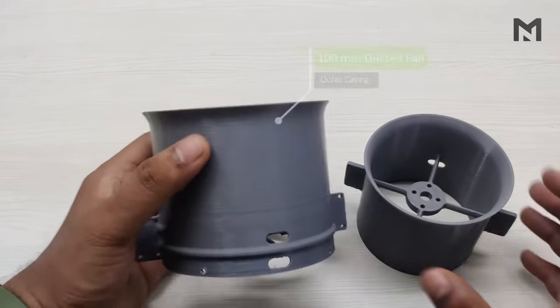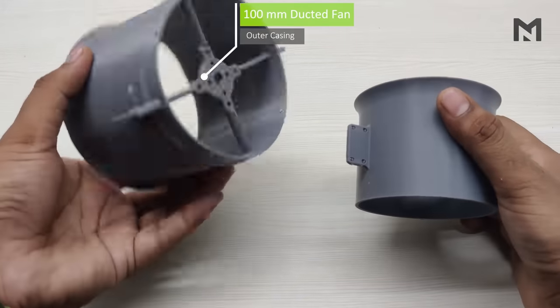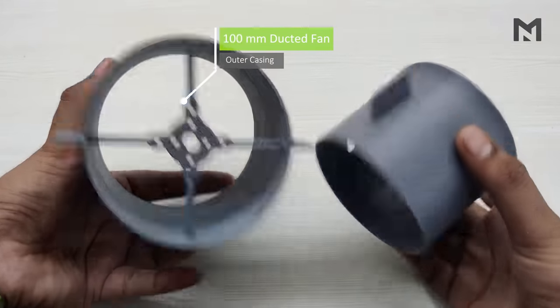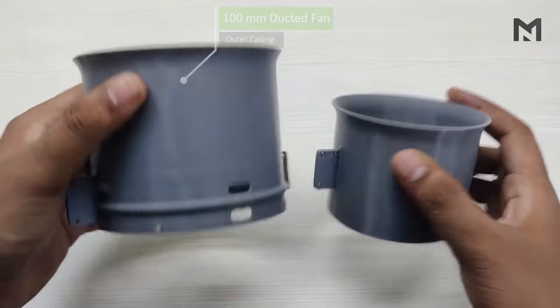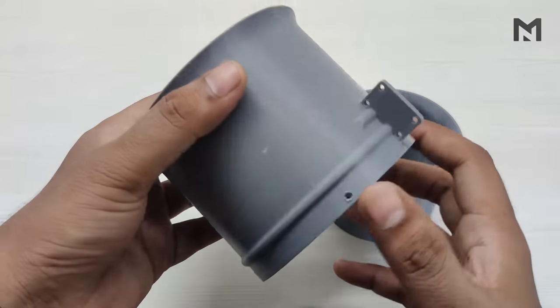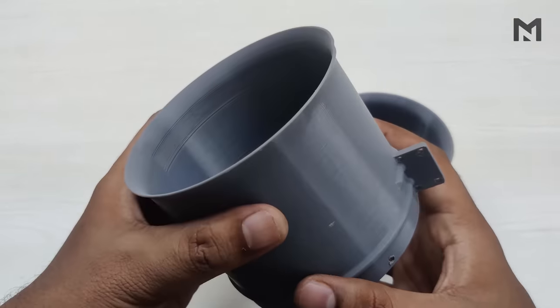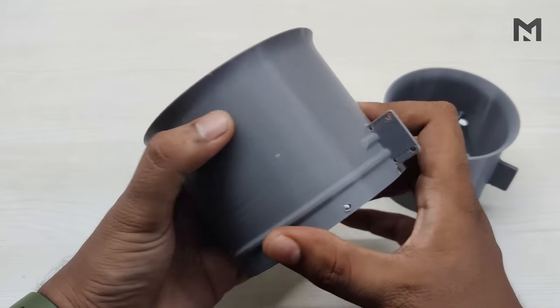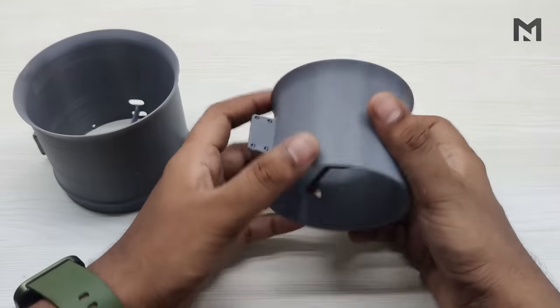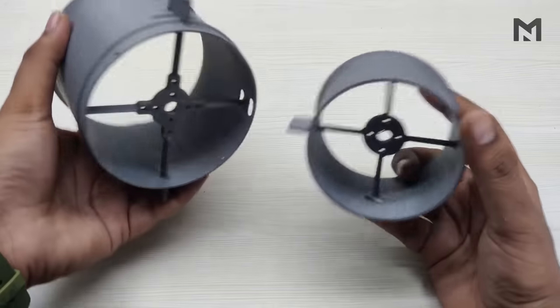When compared to the 100mm ducted fan, this one appears to be much smaller. Both casings are of similar shape, only there is a reduction in size. The 100mm casing has an O-ring present at the lower end of the body to provide extra strength, while it's been eliminated from the 80mm fan as it's already smaller.